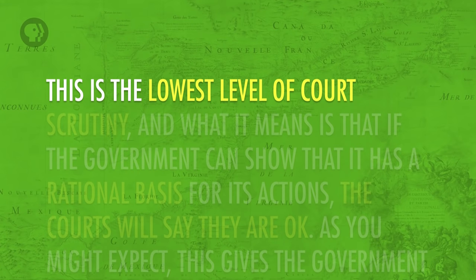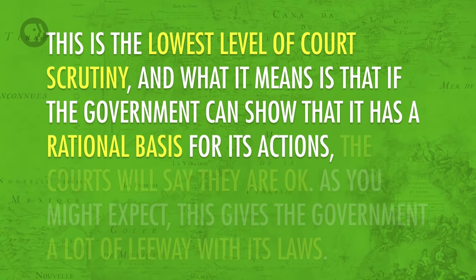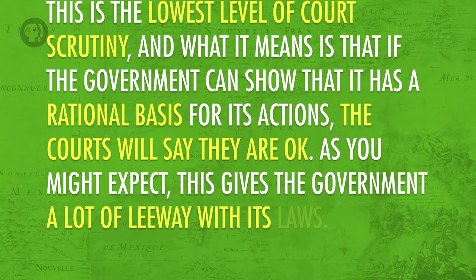So that's strict scrutiny. But what about those cases where the government isn't dealing with a protected class, which is much of the time? Usually the court applies the rational basis standard for review — the lowest level of scrutiny — meaning that if the government can show a rational basis for its actions, the court will say they are okay. This gives the government a lot of leeway. In between strict scrutiny and rational basis review is intermediate scrutiny — a harder standard to meet than rational basis, but it doesn't mean the government usually loses the way it does with strict scrutiny.